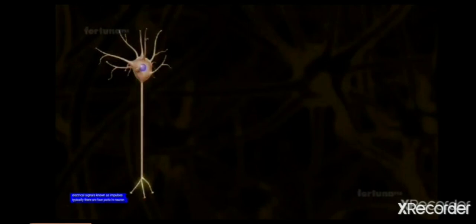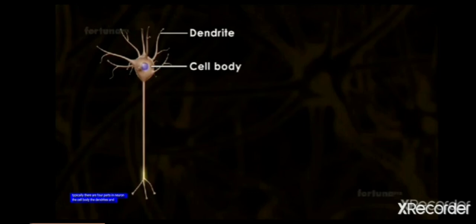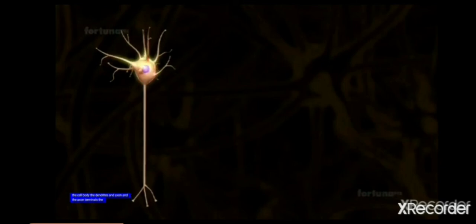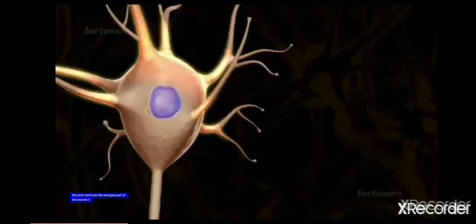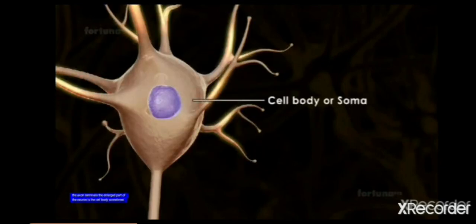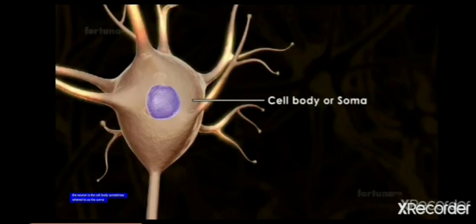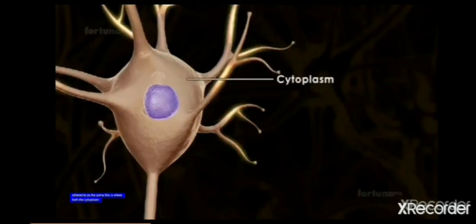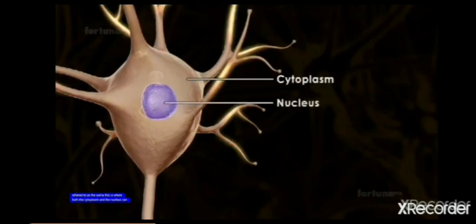The main parts of the neuron are the cell body, the dendrites, axon and axon terminals. The cell body consists of cytoplasm and nucleus.